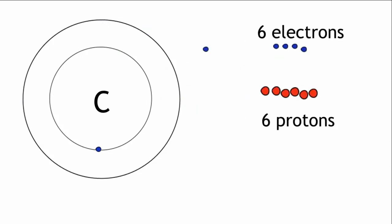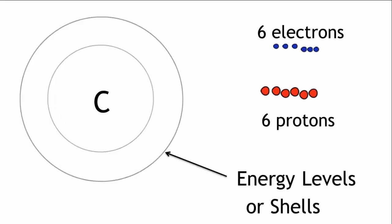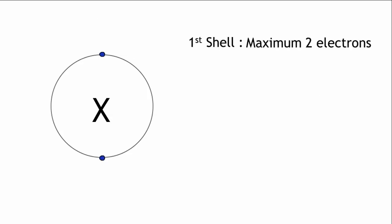The electrons in the atom are organized around the nucleus in different energy levels or shells. Shells can only hold a certain amount of electrons. The first, and innermost shell, can only hold a maximum of two electrons. The shells which come after this can hold a maximum of eight electrons.